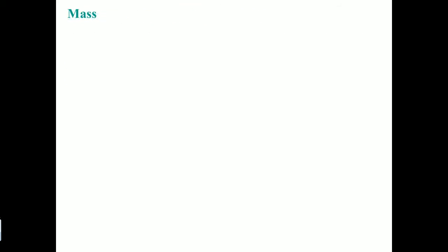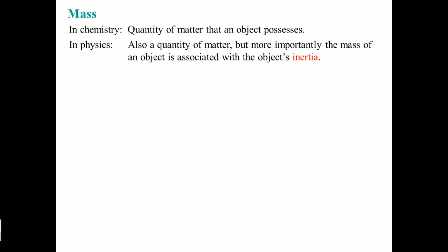Mass. In chemistry, you see mass as just what the object has. But in physics, we talk about it in terms of inertia. Inertia is a property of mass — also a quality of matter. Very importantly, mass is associated with the word inertia.